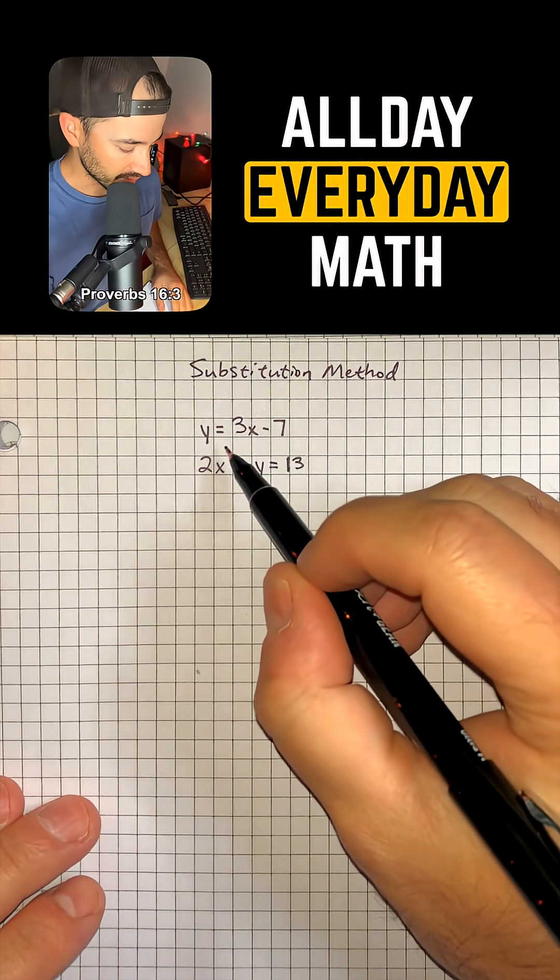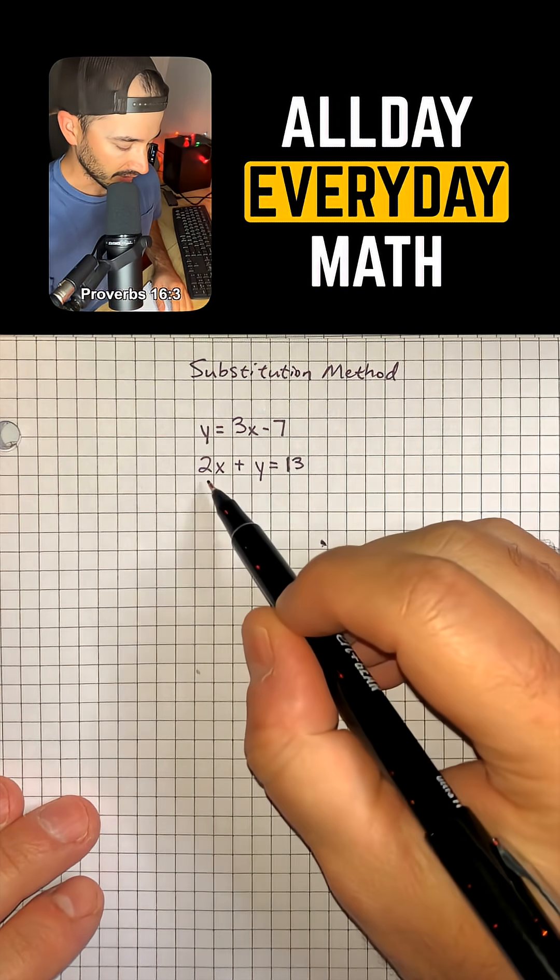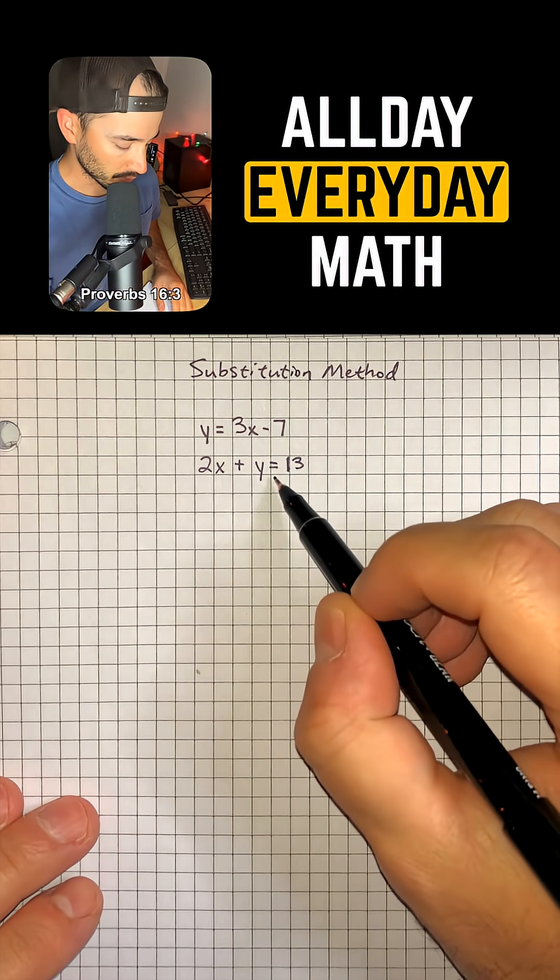So we have the two equations: y is equal to 3x minus 7 and 2x plus y is equal to 13.